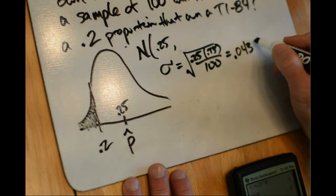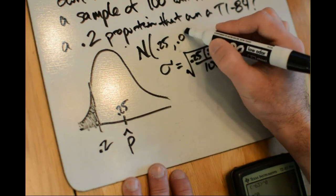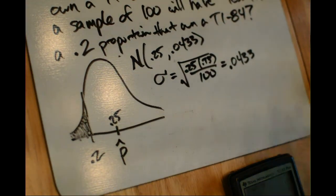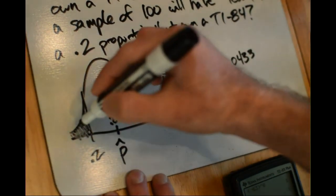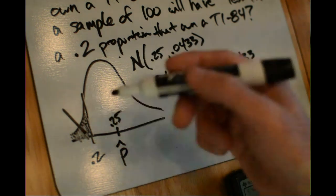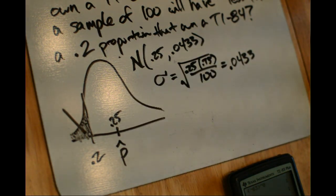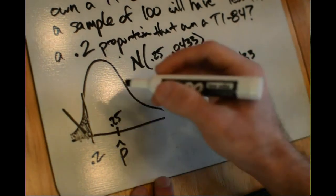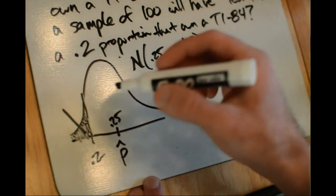Knowing our mean and standard deviation and which part of the curve we're looking for, we just need to find that area. We're looking for the area to the left of 0.2, and that gives us the probability that a sample of 100 has less than that proportion owning a TI-84. That area is 0.0196.